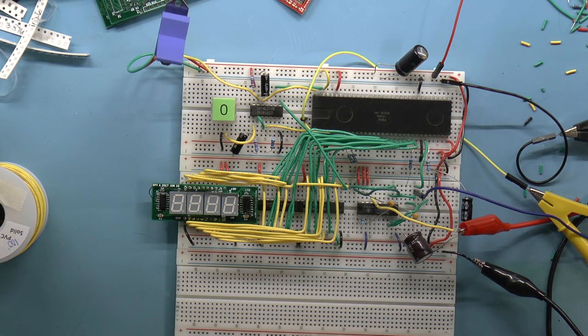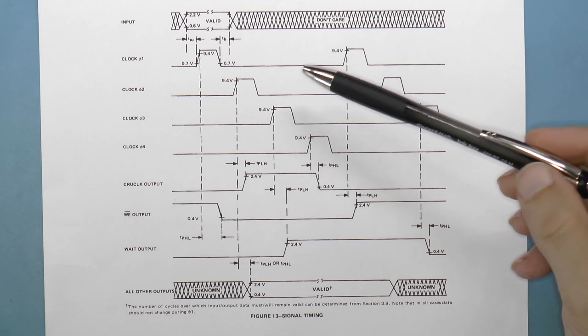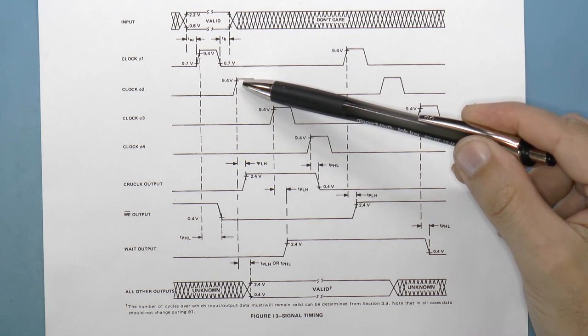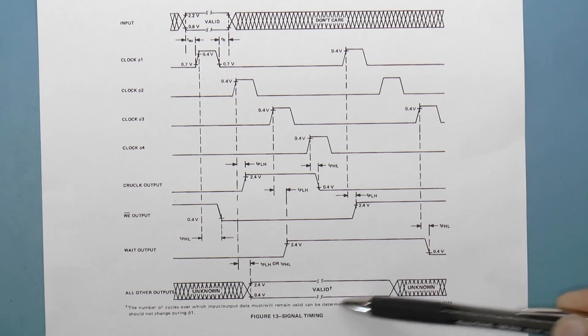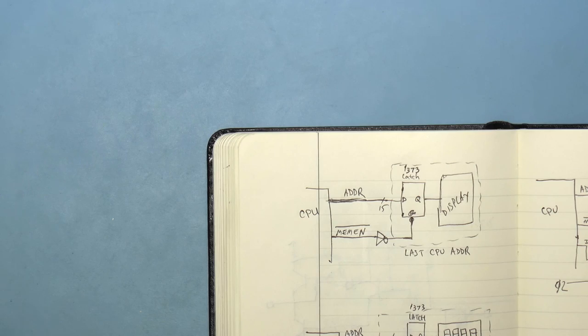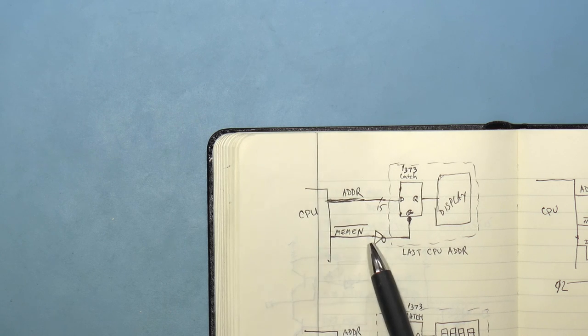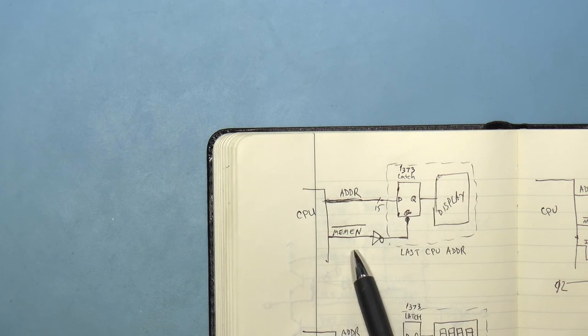Now, this isn't perfect. If we look at the timing diagram in the datasheet, we see that the phase 2 clock causes most outputs to change, and that includes the address, data, and the memory enable lines.